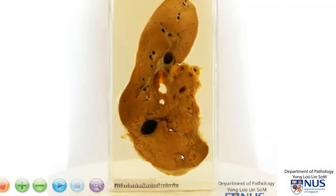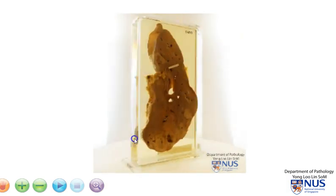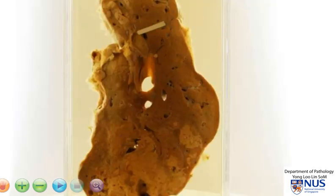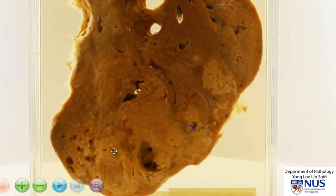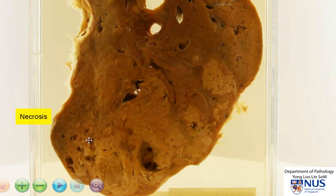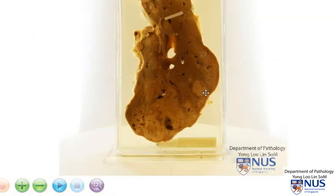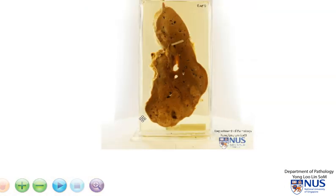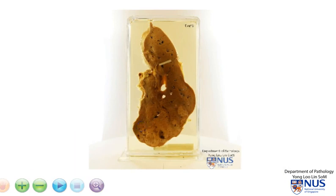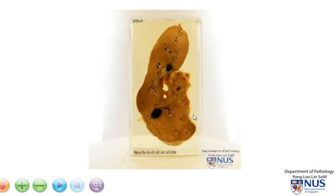At the same time, we also see some paler areas, and these are actually seen better on the opposite surface. Looking at these paler areas within this tumor mass, these actually represent areas of necrosis. Hence, we're looking at a large tumor in the liver, and this is an example of an intrahepatic cholangiocarcinoma.